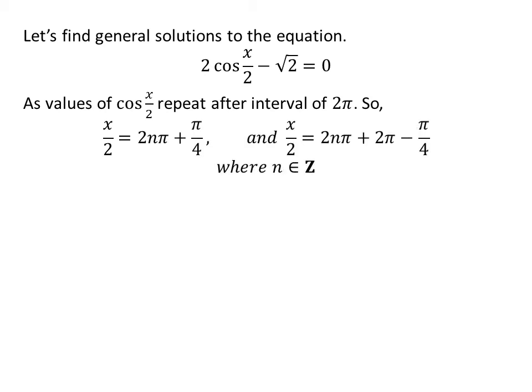Let us find the general solutions. As we know, the values of cosine of x upon 2 repeat after the interval of 2 times pi. So, the general solutions are x upon 2 is equal to 2 times n times pi plus pi upon 4, and x upon 2 is equal to 2 times n times pi plus 2 times pi minus pi upon 4, where n is an integer.